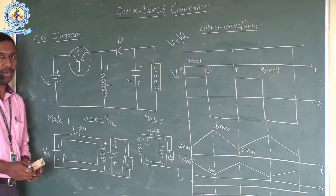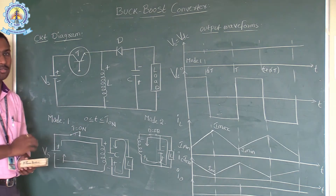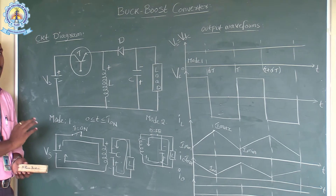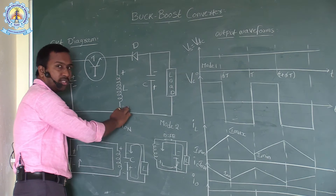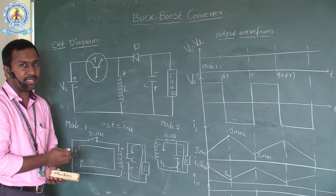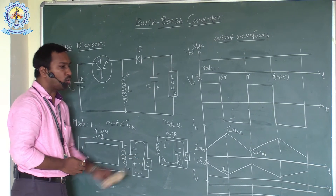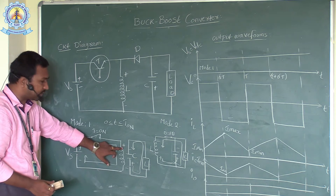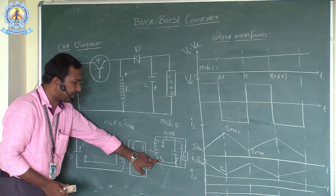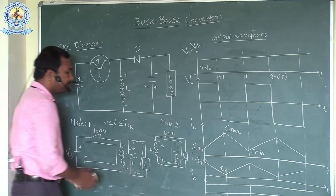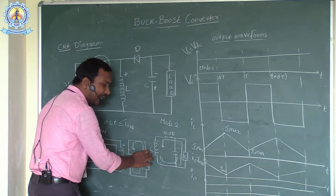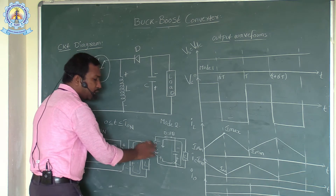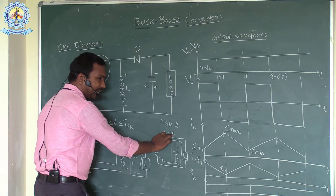Now let us see mode two of operation. During mode two, the switch acts as OFF. Whenever the switch is in the OFF condition, the supply terminals are disconnected from the circuit. Now the inductor acts as a source — it discharges its energy and can be represented as a source. The terminals are interchanged from mode one. From mode two, we represent the polarity as opposite to mode one. The inductor, acting as a source, discharges in the direction of L plus to load and load to inductor minus.